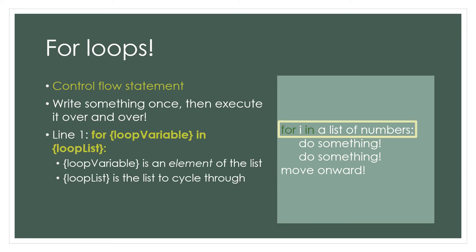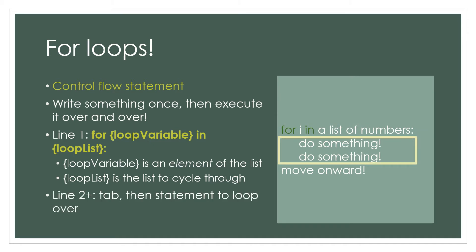So how do we write a for loop? You start a for loop using this bright green statement. The curly brackets show where you would enter your own input. LoopList represents a list you cycle through in the for loop. LoopVariable tracks which element you are currently using in LoopList. Once you have line 1 complete, the piece of code you want to loop over comes next, with each line indented using the tab button. This can include as many lines as you want. To exit this for loop and return to normal code execution, you simply stop indenting.